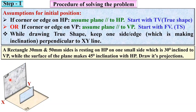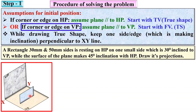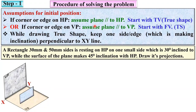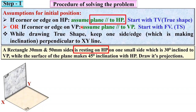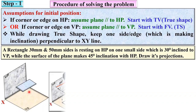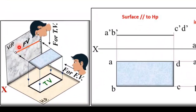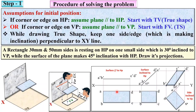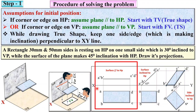If you assume the plane positioned the other way, it would be considered parallel to VP — but for this problem, since it is resting on HP, you have to assume the plane is parallel to HP. You can then see the top view and front view accordingly. This is the solution's first stage, and here we focus on step number 1 only.